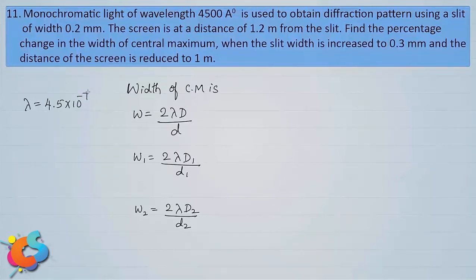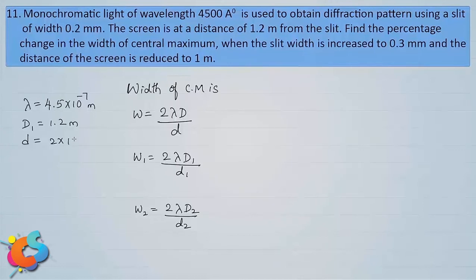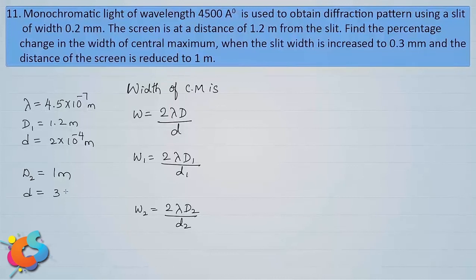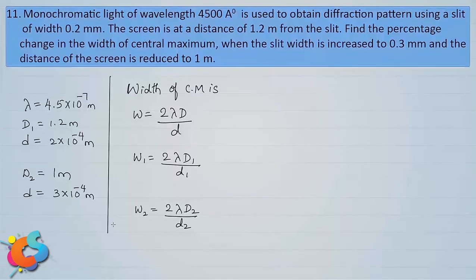The data: λ = 4500 Ångström = 4.5 × 10⁻⁷ meter. First case: screen distance D₁ = 1.2 meter, slit width d₁ = 0.2 mm = 2 × 10⁻⁴ meter. Second case: screen distance D₂ = 1 meter, slit width d₂ = 0.3 mm = 3 × 10⁻⁴ meter.